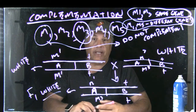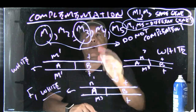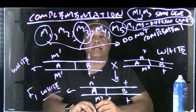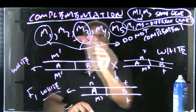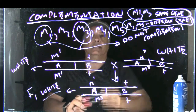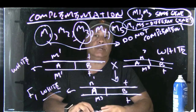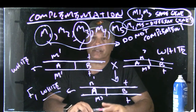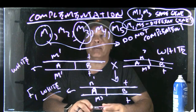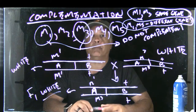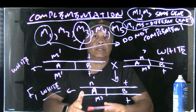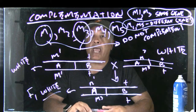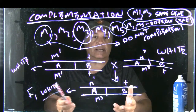It's important to note that you can really only do effective complementation tests when you're testing recessive alleles — recessive mutations. Dominant mutations will not work; you cannot establish complementation relationships with dominant mutations. And for that we'll do an activity.